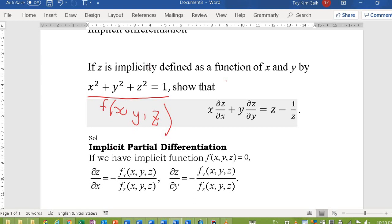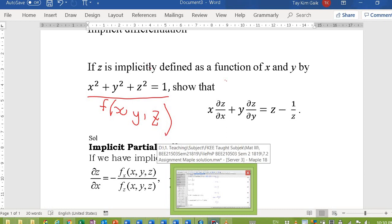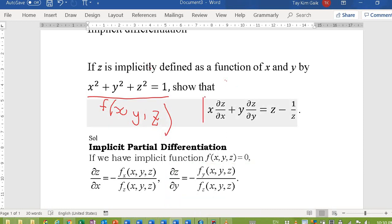Then to find ∂z/∂x is -fx/fz. To find ∂z/∂y is -fy/fz. So we are going to show this one using Maple.